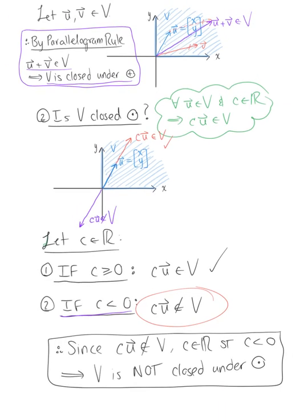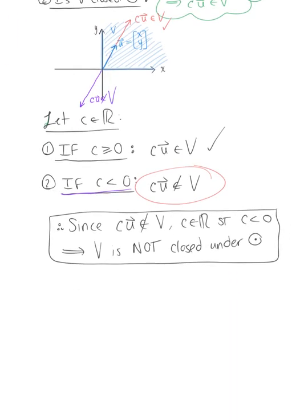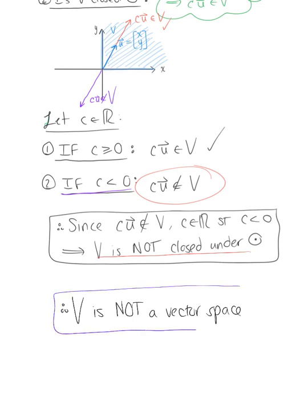So although we just showed in the first case that this space V was closed under addition, because it is not closed under scalar multiplication, our final conclusion tells us that V is not a vector space. Both of them would need to hold true for this space to be a vector space.